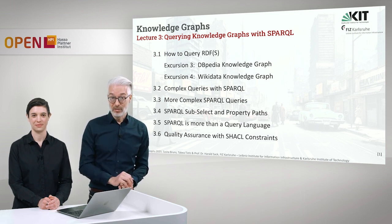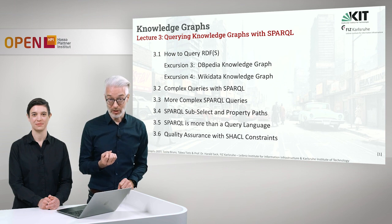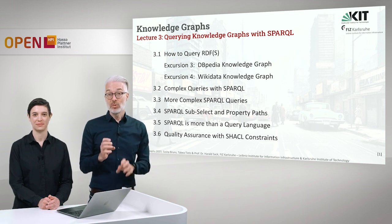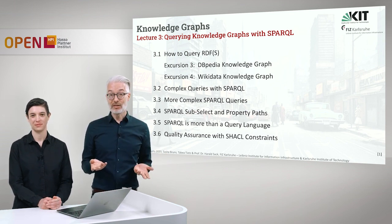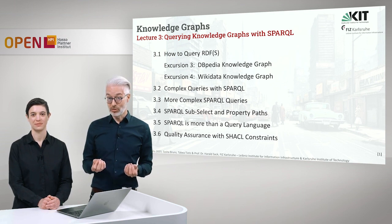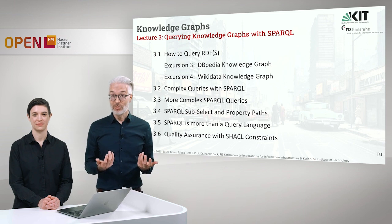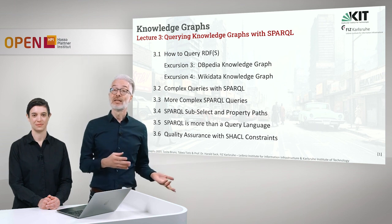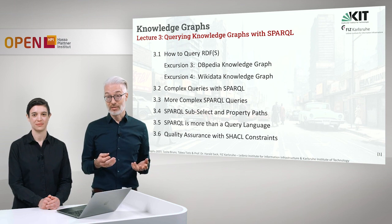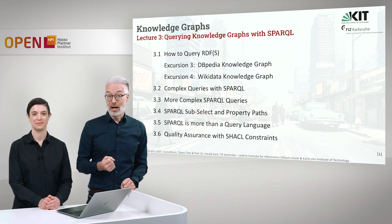After that, we have one last topic: how can we guarantee quality assurance in SPARQL? We are dealing with the semantic web, which means the world we are looking at is an open world. Things which are not explicitly stated to be false or true are simply unknown and potentially true or false. The same holds for duplicates — identity has to be denoted explicitly. This makes quality assurance really hard, and how we cope with that is shown in chapter 3.6 when we deal with quality assurance with SHACL constraints.